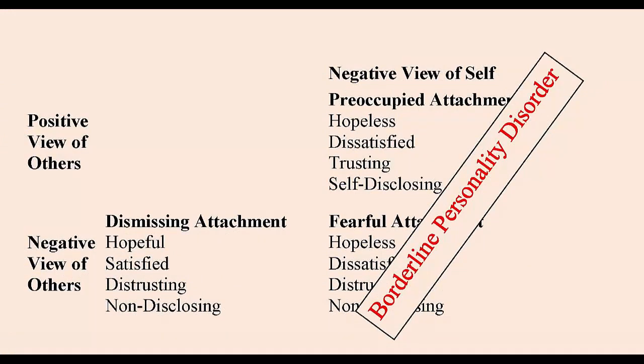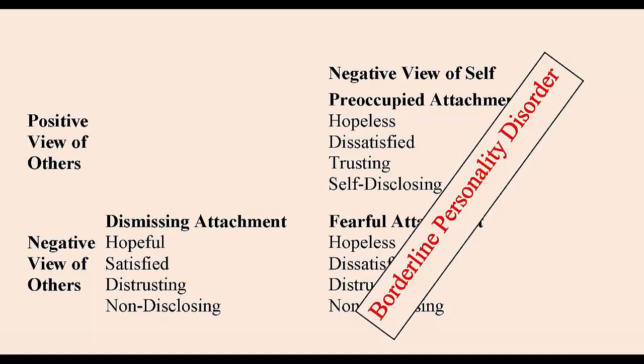When we talk about borderline personality disorder, these individuals can fall into one of two categories, or a mixture of both: the preoccupied attachment type and the fearful attachment type. Some individuals with BPD fall into the preoccupied type — preoccupied with relationships and trying to make others make them feel okay. The fearful attachment type includes those who are uncertain about themselves and the world, want connection, but are afraid of having that connection and being hurt.